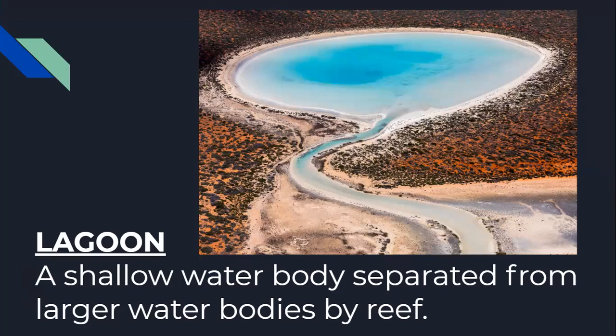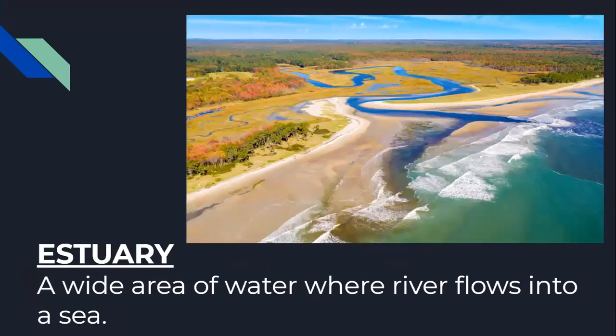You can see the water body is separated. Estuary — a wide area of water where a river flows into the sea. Whenever we hear about a river flowing, we usually hear that the river flows into the ocean. But when it is flowing into a sea, it's called an estuary.